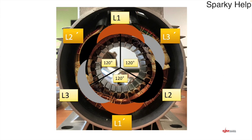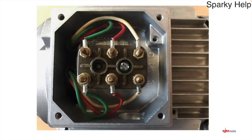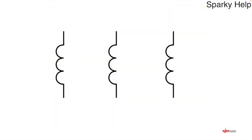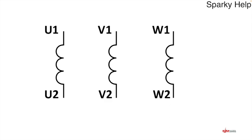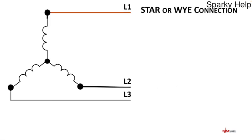Those six ends mean the manufacturer can bring all six terminals out for you to configure, or connect them permanently as star or delta and bring only three out. The coils in a motor are labelled U, V, and W — that's the standard. Each end of each winding is labelled number one, and the other end is labelled number two, so you have U1, V1, W1 and U2, V2, W2 brought up to the terminals.